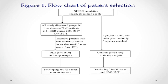In this figure, among pyogenic abscess persons, 760 persons developed GI cancer until 2009. In the control group, 784 persons developed GI cancer until 2009.